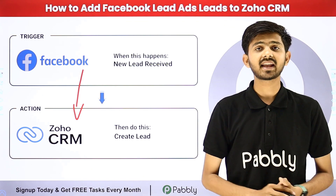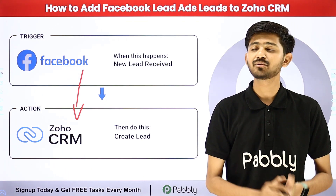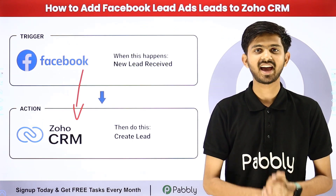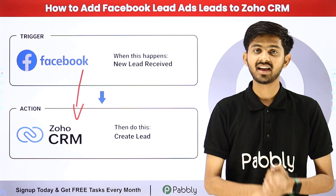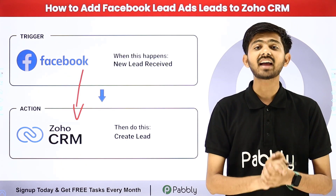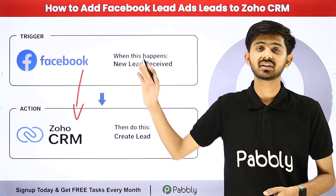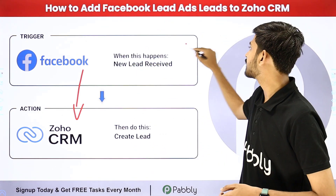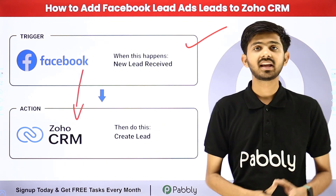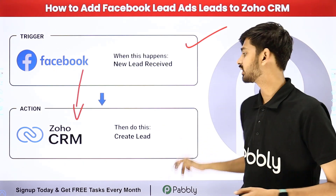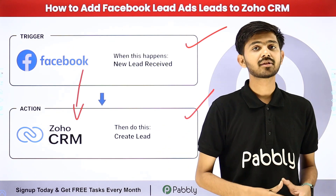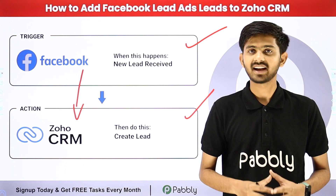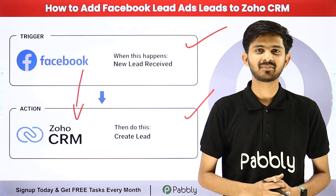For building this connection, I'm going to use Pabbly Connect, which is an amazing software for automation and integration. In Pabbly Connect, I have to use trigger and action. In the trigger application, I'm going to use Facebook Lead Ads, and in the action application, I'm going to use Zoho CRM. Let me take you to my computer screen.